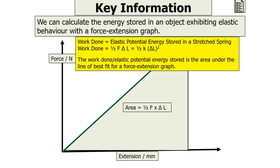To clarify: the work done is the elastic potential energy stored in a spring, where work done equals half F times delta L, which also equals half K times delta L squared. The work done — or elastic potential energy stored — is the area under the straight line of best fit for a force extension graph.